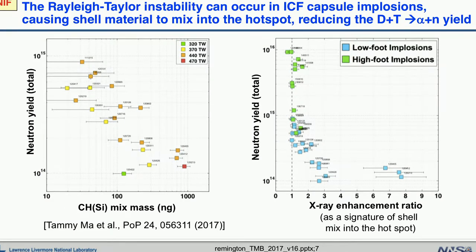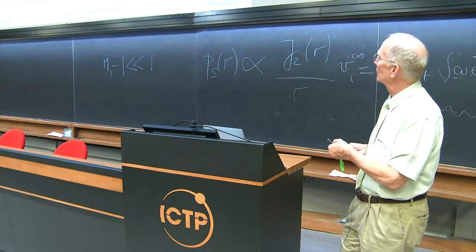This is the consequence of inserting shell material down into the hot spot, quantified in terms of nanograms of plastic. The plastic is the outer shell — plastic doped with silicon. When the amount of silicon-doped plastic that makes it into the hot spot increases, you can see that the nuclear yield is dropping on a log plot. When you put plastic down into the hot spot, it radiates the heat away, the DT plasma cools, and the nuclear yield drops. We're studying this effect carefully and quantifying it so that we can control how much mixing happens into the hot spot.